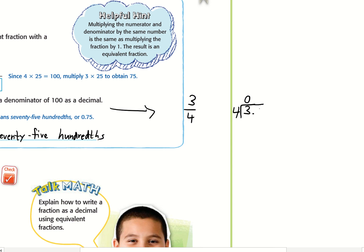If I put a decimal behind the 3 and annex a 0, 4 goes into 30 seven times. 7 times 4 is 28. That's 2.